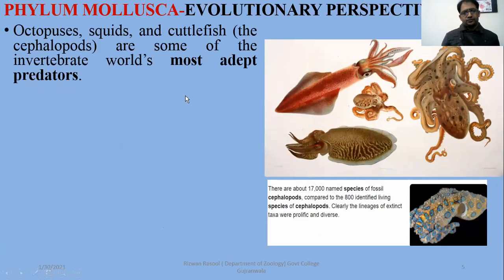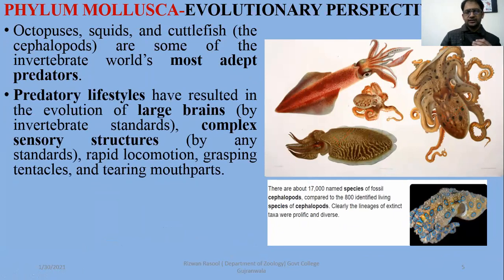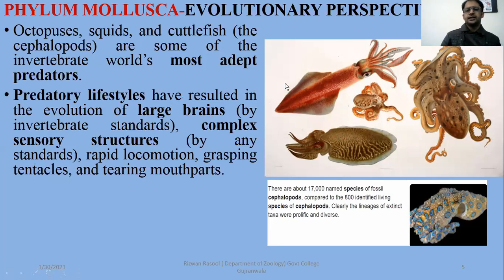In Phylum Mollusca, from an evolutionary perspective, octopuses, squid, and cuttlefish — shown on the right side — are some of the most adaptable invertebrate predators. They are counted among the best predators because of their skills and adaptation. They have a lot of agility and activity, and a predatory lifestyle because of their larger, evolved brains. Complex sensory structures developed, like their eyes — they have well-developed, vertebrate-like eyes — along with rapid locomotion, grasping tentacles, and tearing mouthparts.